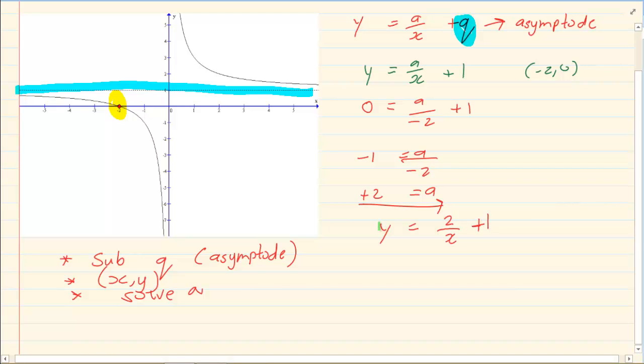When you have the equation, the only unknowns you should have are y and x. Let's do another example.